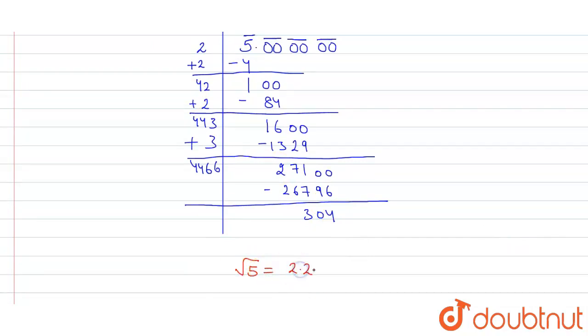Now we will stop here and we get square root of 5 as 2.236. Now here the last digit is more than 5, and if the last digit is more than or equal to 5, then we increase the previous digit by 1. So this will be 2.24. So square root of 5 correct up to two decimal places is 2.24.